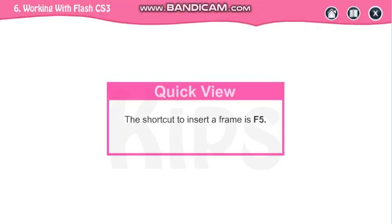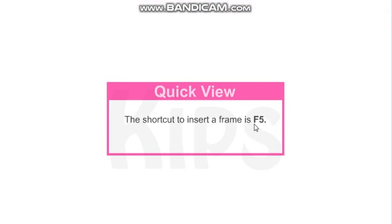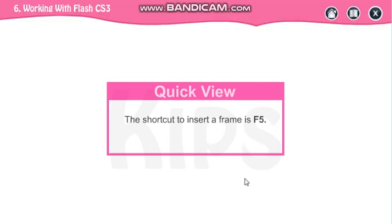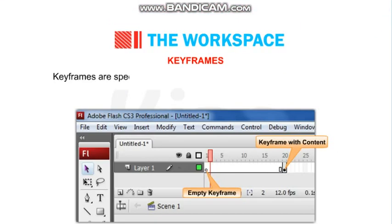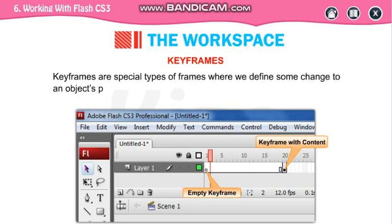The shortcut to insert a frame is F5, and for inserting a keyframe the shortcut key is F6. Keyframes are special types of frames where we define some changes to an object. This empty circle is your empty keyframe, and this filled circle is your filled keyframe — it shows that this keyframe contains some drawing. This part is your empty keyframe, and this is your keyframe.